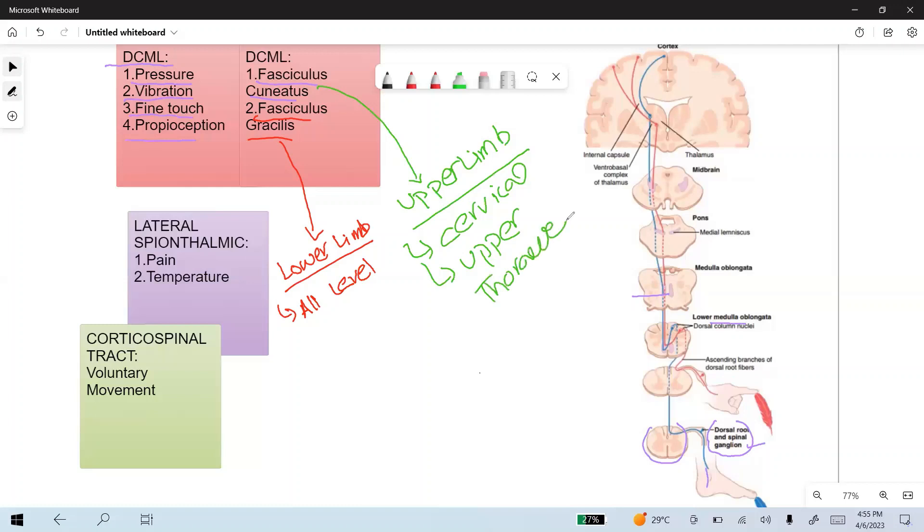Next important stuff is these fasciculus cuneatus and gracilis synapse at the medulla, at the nucleus of the cuneatus and gracilis. And these are basically the cell bodies of the second-order neuron.